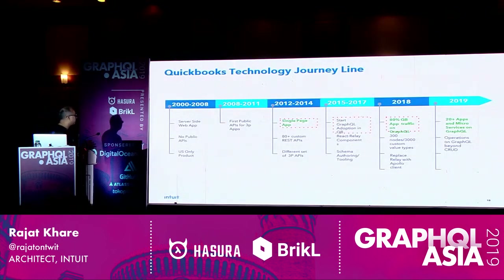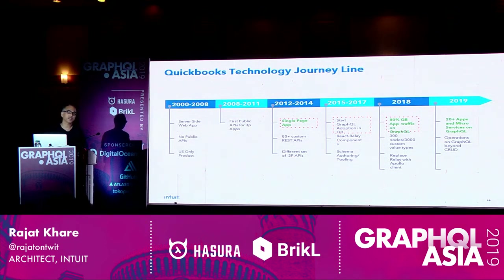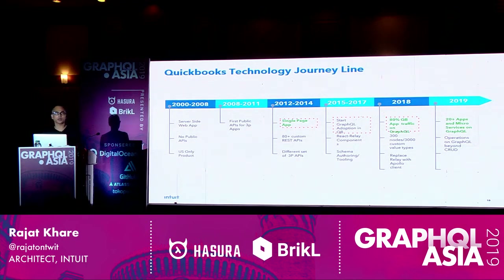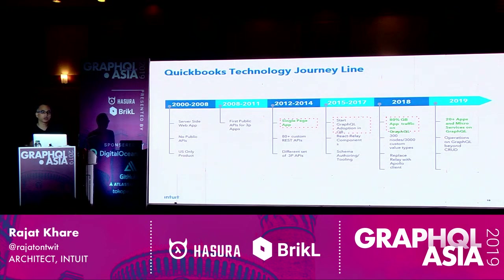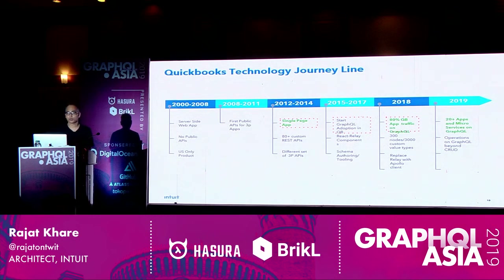Looking at the technology journey: the first instance of QuickBooks came up when the web took off. We had a very popular desktop product in the US, and as the web started springing up, we created a web application — roughly 2000 to 2008 — a server-side generated web app with no public APIs, serving only US customers with no global presence. The next shift, around 2008 to 2011, was embracing third-party connectivity, so we created the first rudimentary third-party APIs bolted onto the web application to allow other financial applications to connect to QuickBooks.